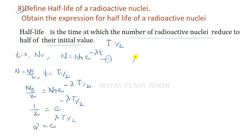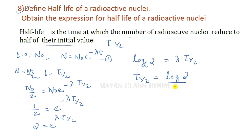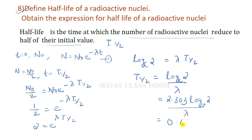Taking the logarithm: log 2 = λT½, therefore T½ = log 2 / λ. Since log 2 = 0.693, we get T½ = 0.693 / λ.